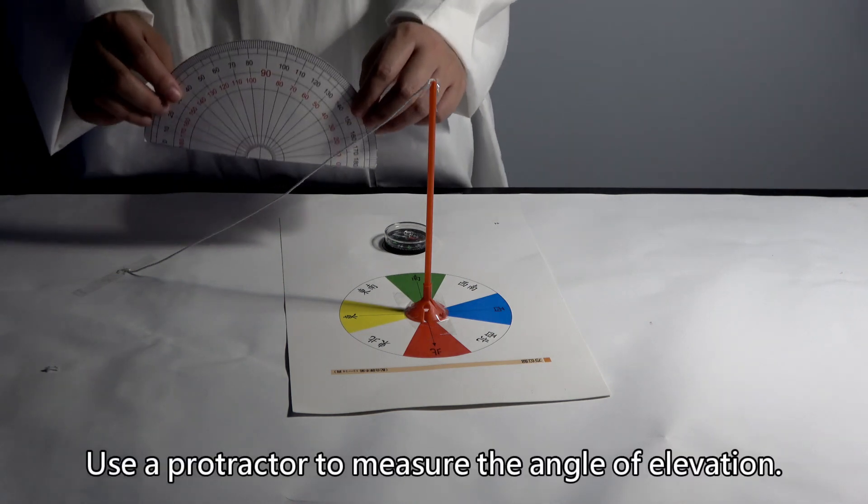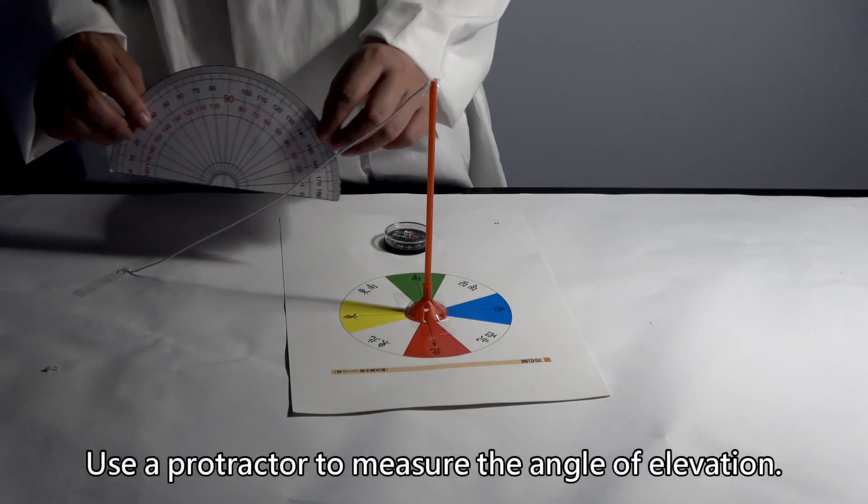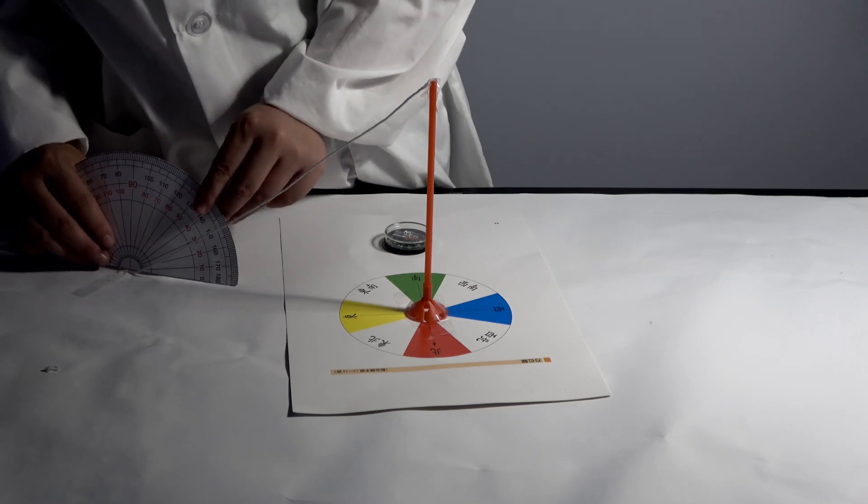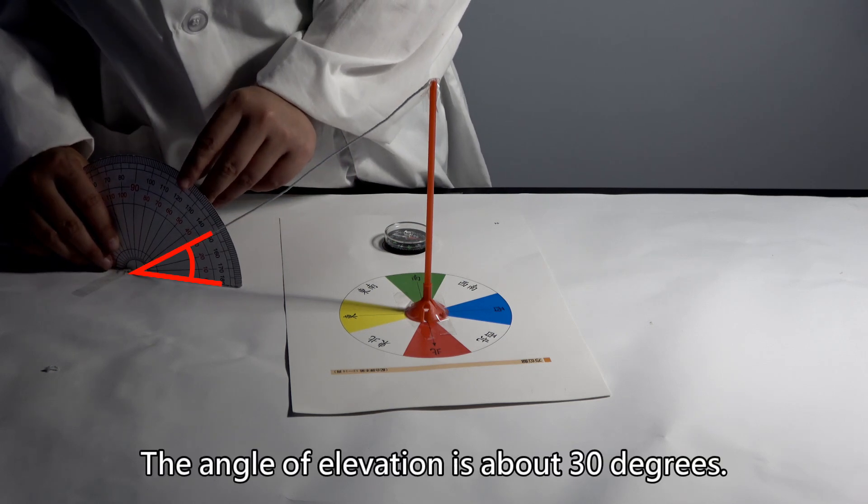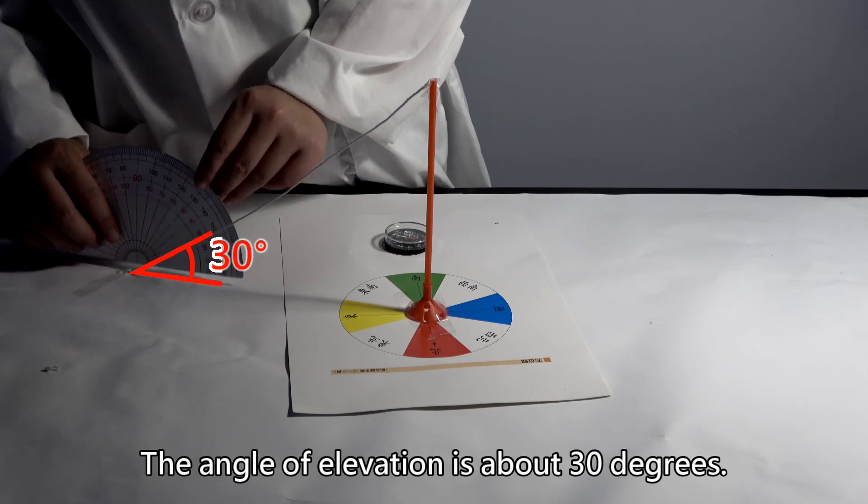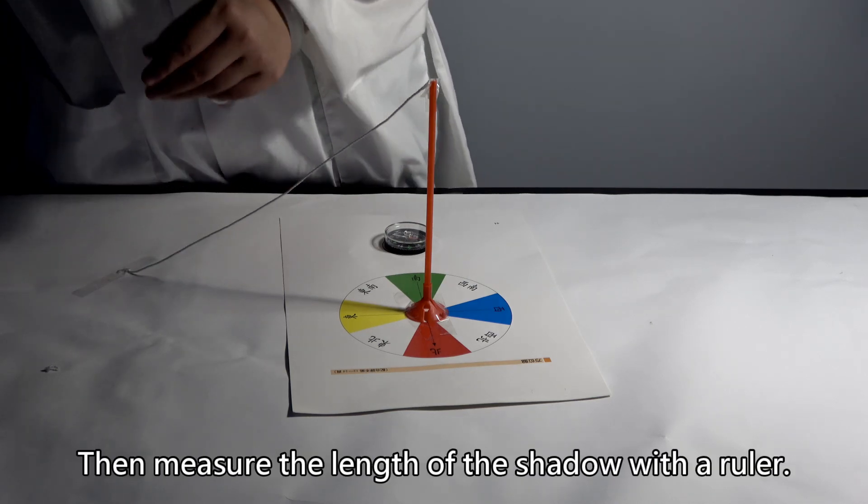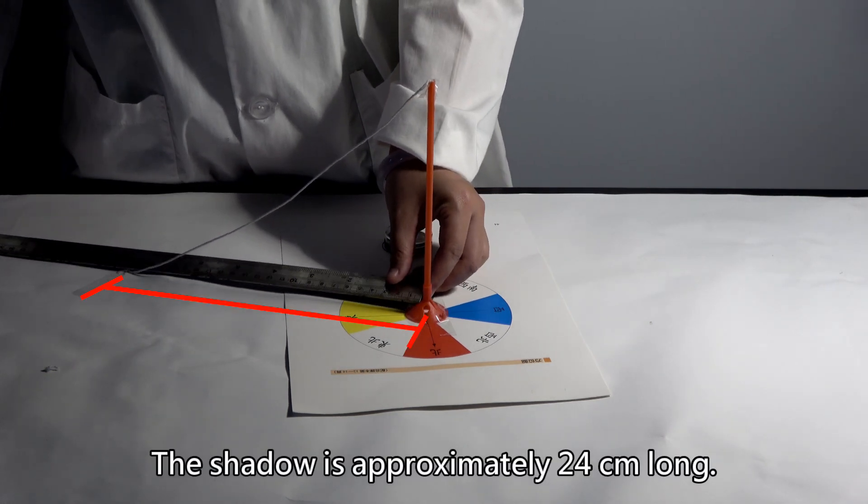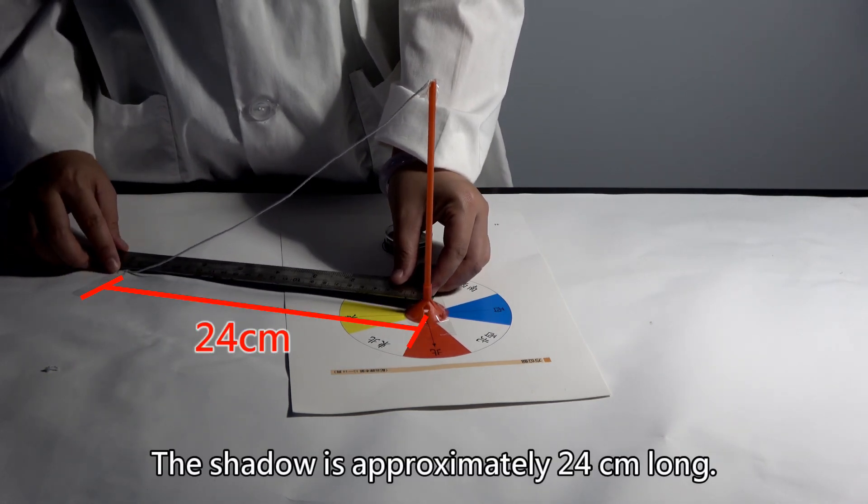Use a protractor to measure the angle of elevation. Position it at the edge of the thread. The angle of elevation is about 30 degrees. Then measure the length of the shadow with the ruler. The shadow is approximately 24cm long.